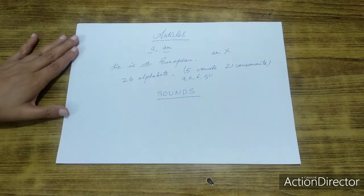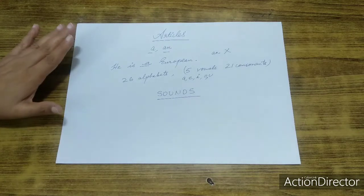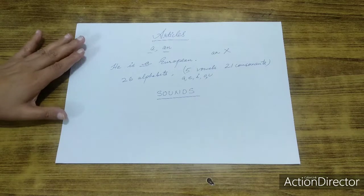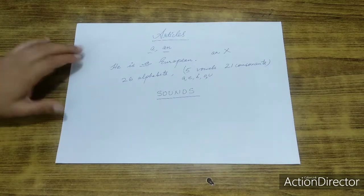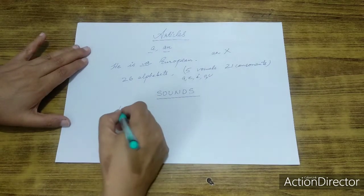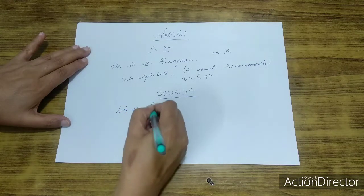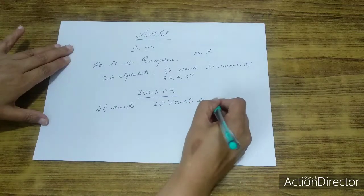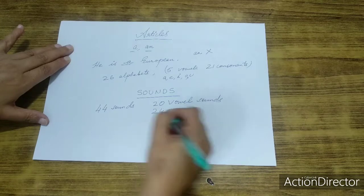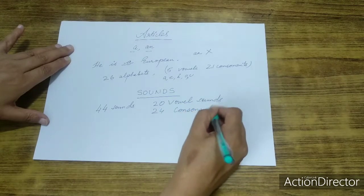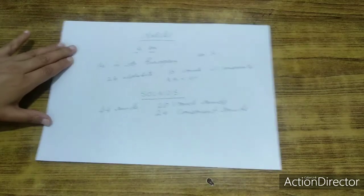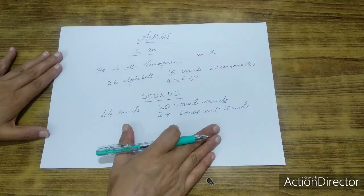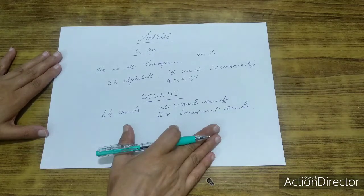The rule is that the article which will be applied will be on the basis of the sound of the word. Now, if we talk about English language, then there are 44 sounds in English, of which 20 are vowel sounds and 24 consonant sounds. Have you heard about this? This is part of what we call linguistics, the study of language.